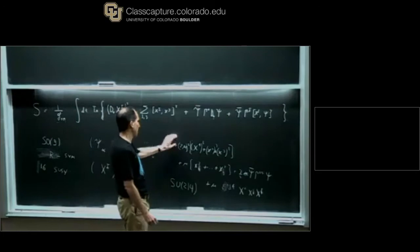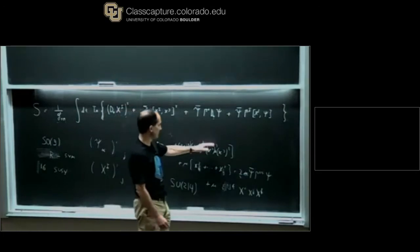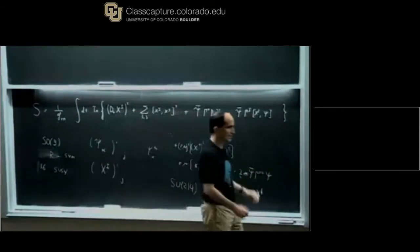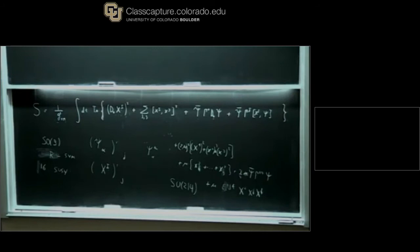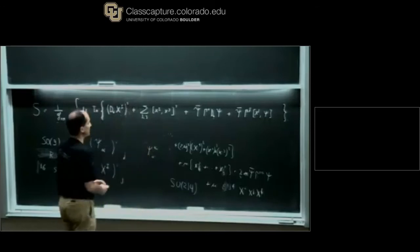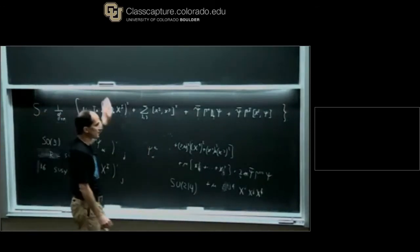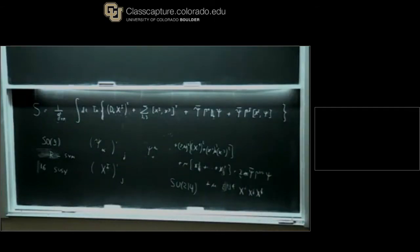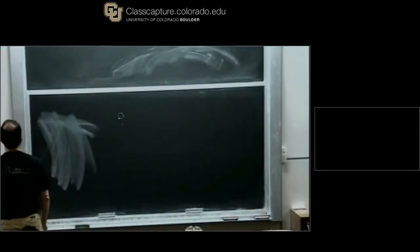At extremely weak coupling you have a bunch of harmonic oscillators; when the coupling is stronger, the theory develops non-trivial dynamics. Now, the gravity dual of this matrix model — first I should say that this matrix model also describes the dynamics of D0-branes in string theory. If you have a bunch of D0-branes all sitting at the same location, there are open strings living on the brane, and at low energies the dynamics of these open strings is described by this simple matrix model.